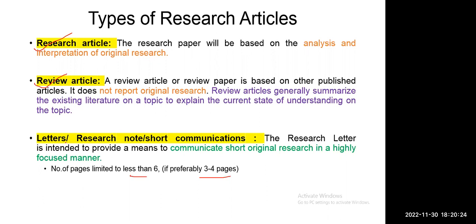When coming to the PhD, if you want to be awarded a PhD, you need to publish at least one to two research articles, which should be indexed by Scopus or SCI. The two papers must be research articles — we cannot get a degree with review articles. Why? Because the PhD degree represents your original contribution, so we need to publish only research articles, meaning we need to publish our original work.